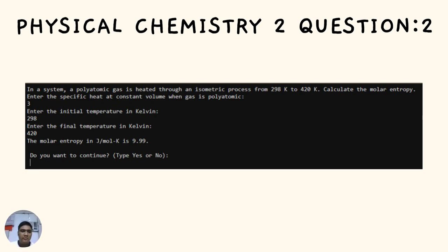For question number two: In a system, a polyatomic gas is heated through an isometric process from 298 Kelvin to 420 Kelvin. Calculate the molar entropy. First, enter the specific heat at constant volume for a polyatomic gas, which is 3. Enter the initial temperature of 298 Kelvin and the final temperature of 420 Kelvin. The molar entropy is 9.99 joules per mole Kelvin.